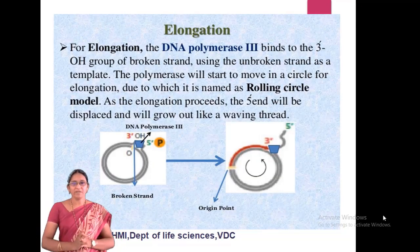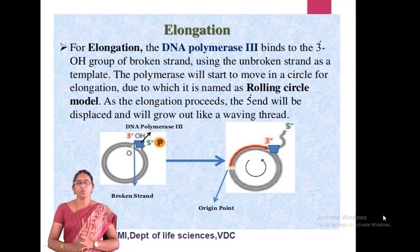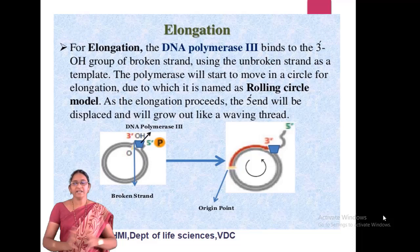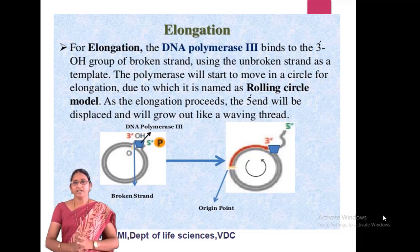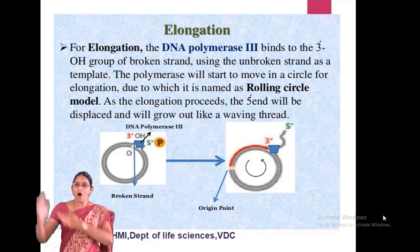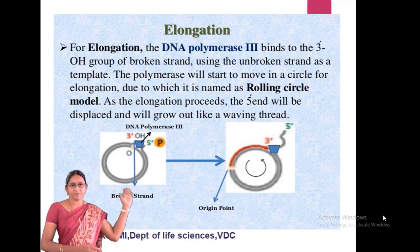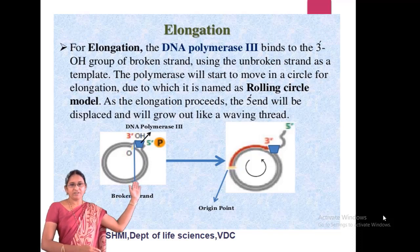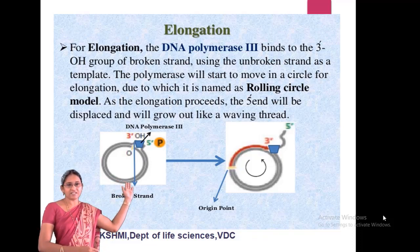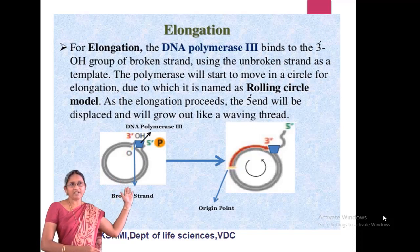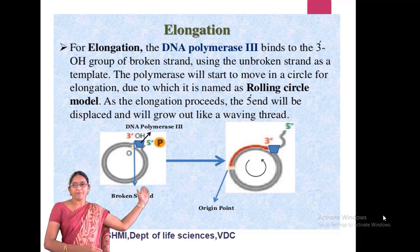For elongation, DNA polymerase III binds to the 3' hydroxyl group of the broken strand, using the unbroken strand as a template. The polymerase moves in a circle for elongation, which is why it is named the rolling circle model. As elongation proceeds, the 5' end is displaced and grows out like a trailing thread. Without any RNA primer, DNA polymerase starts synthesis on the unbroken template strand, and the single strand is slowly displaced from this double-stranded circular DNA molecule.